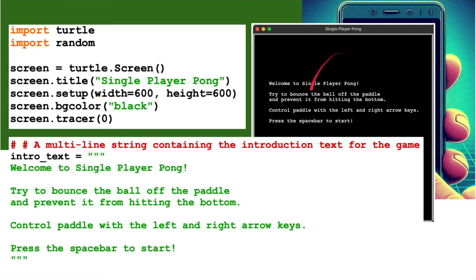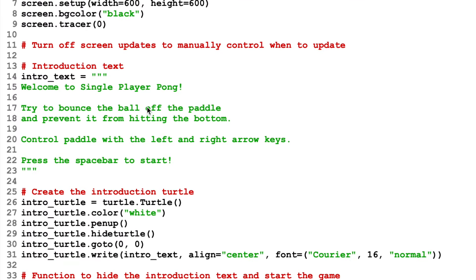Let's have a little look at this. The instruction screen I've just shown you - this is how we do it. We create a variable called intro_text and within that we've got a multi-line string. I've done this with the three quote marks. Welcome to single player pong - try to bounce the ball off the paddles and there are the instructions for the game. Press spacebar to start. But the text won't appear on screen because we haven't told it to.